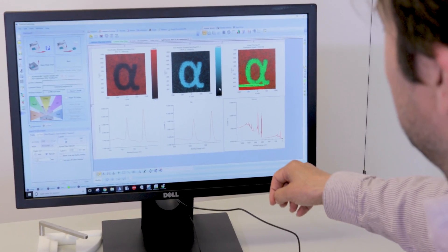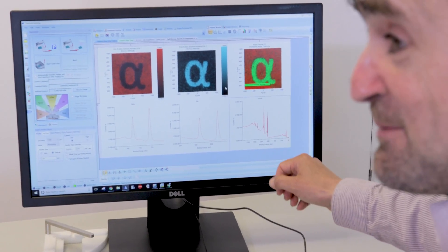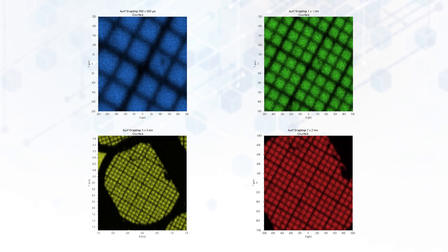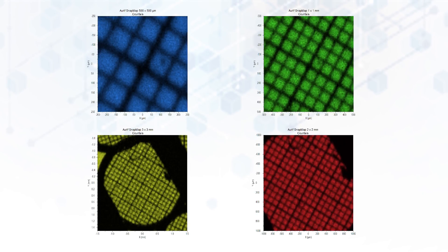SnapMap can be used for a number of different experimental purposes. Large area SnapMaps can be used to determine the distribution of chemistry across the sample surface. Small area SnapMaps can be used to isolate features down to 10 microns in size. Even features invisible to the naked eye can be identified and isolated for further analysis.